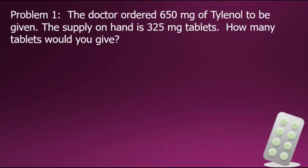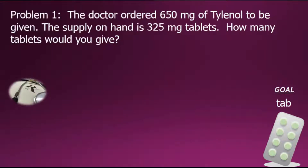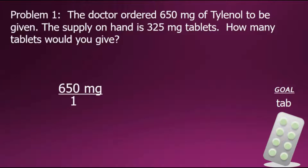Problem number one states the doctor ordered 650 milligrams of Tylenol to be given. The supply on hand is 325 milligram tablets. How many tablets would you give? To solve this problem, let's first set up what our goal is. The question is asking for number of tablets, and as we proceed through solving this problem, we'll keep that in mind. To begin a problem using dimensional analysis, we will always start with the doctor's orders expressed as a fraction.